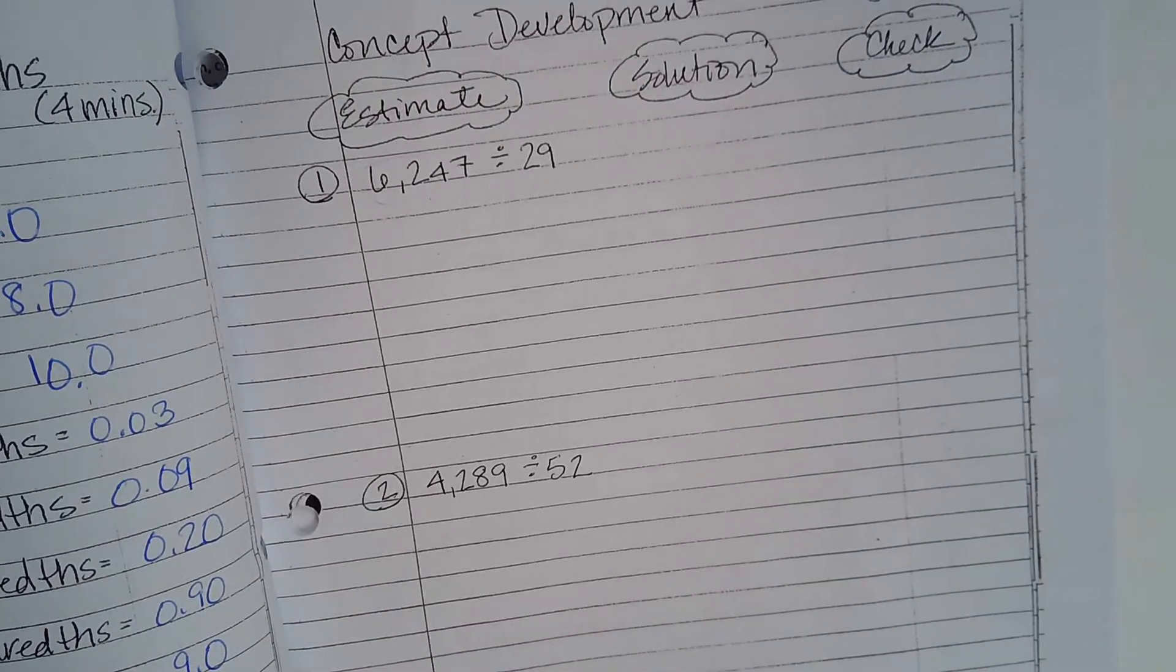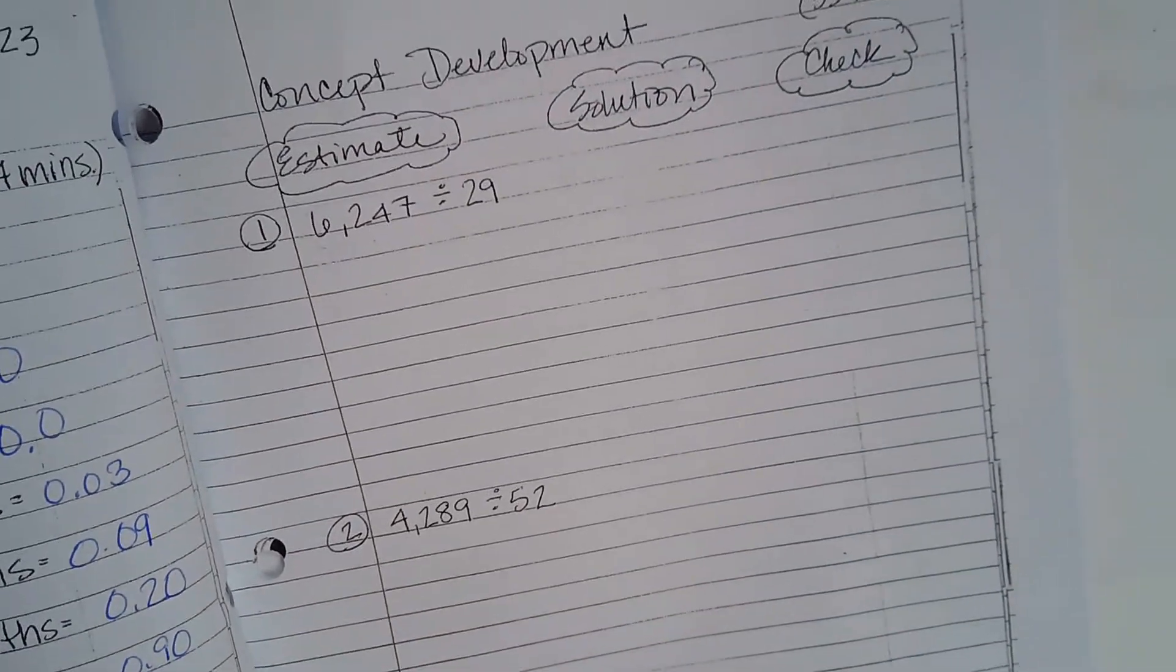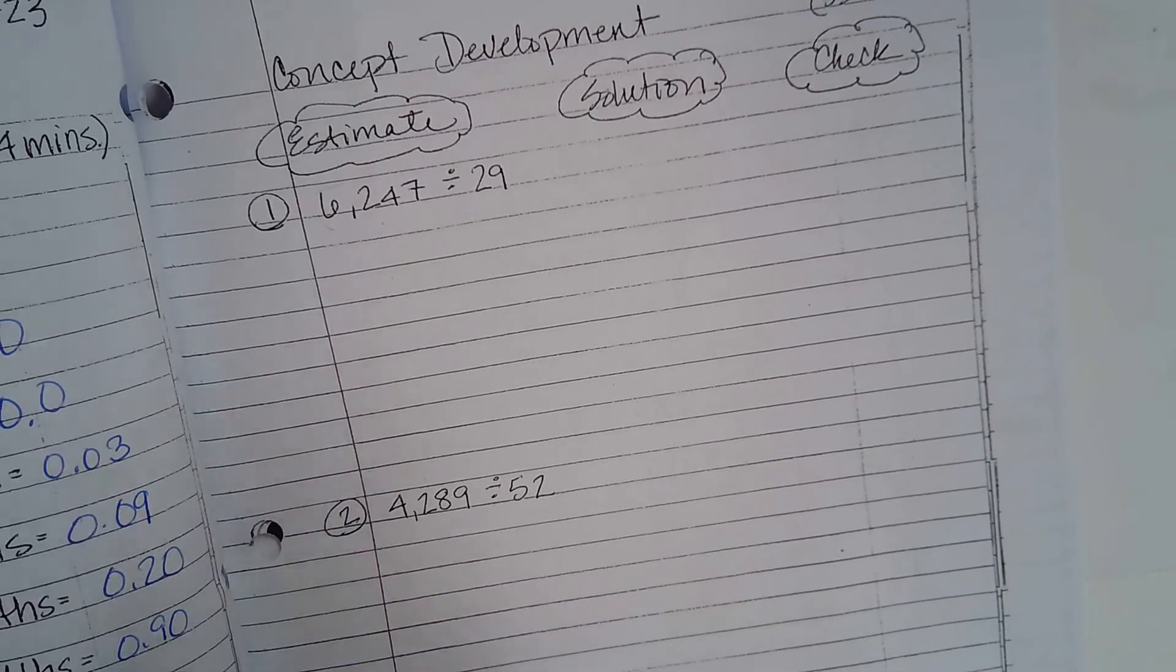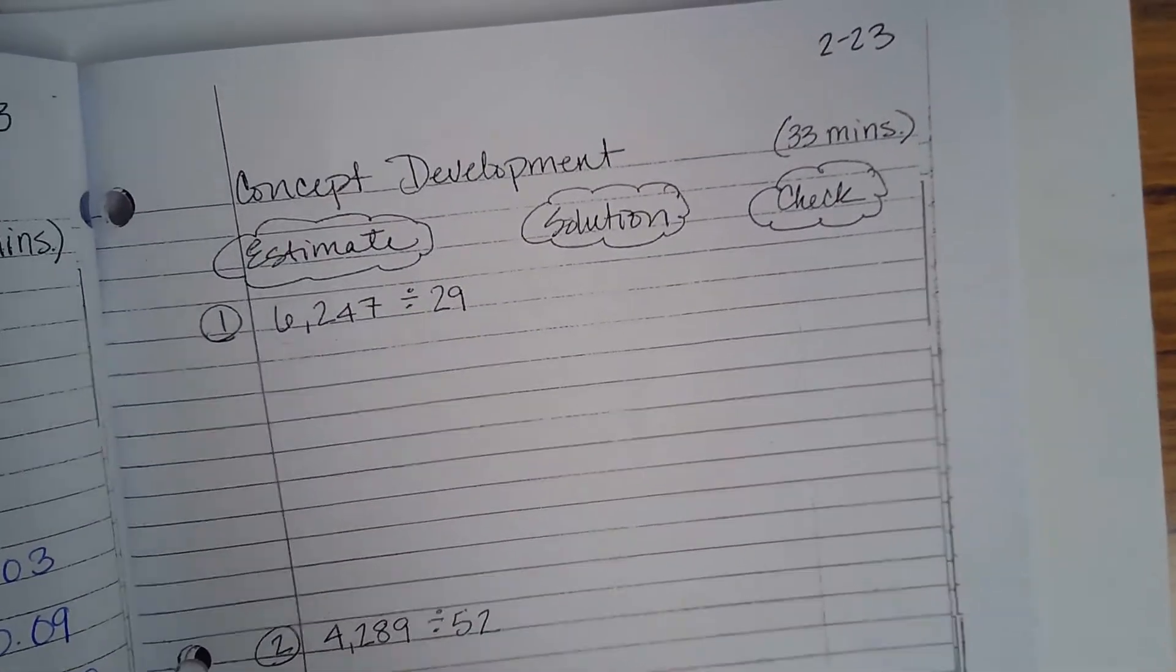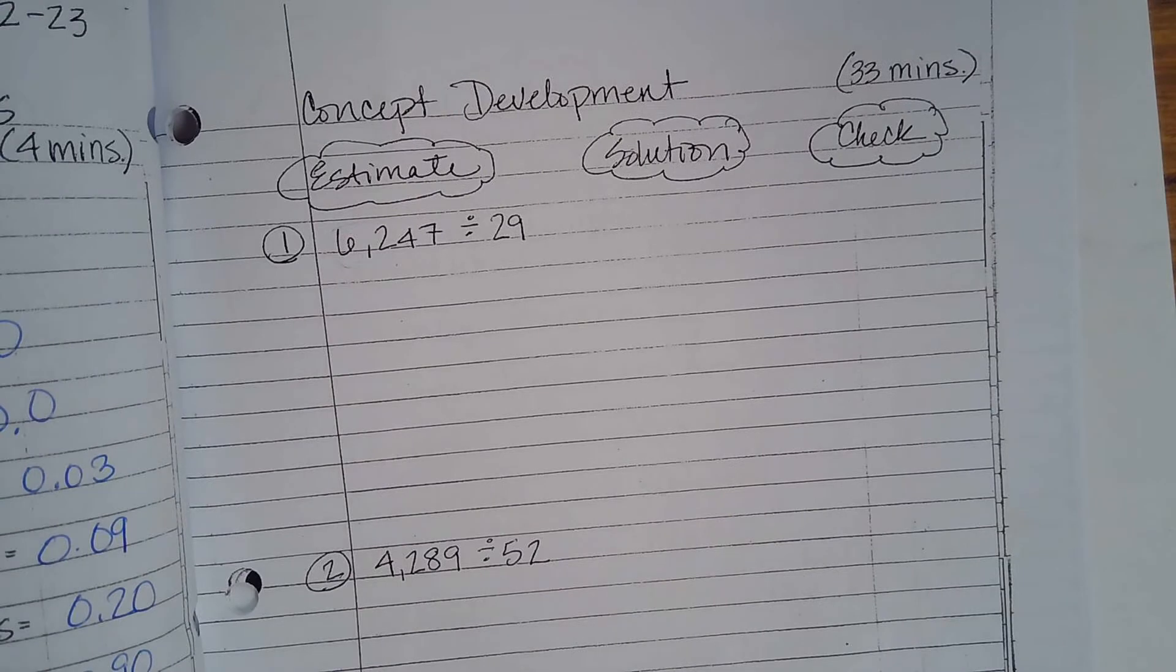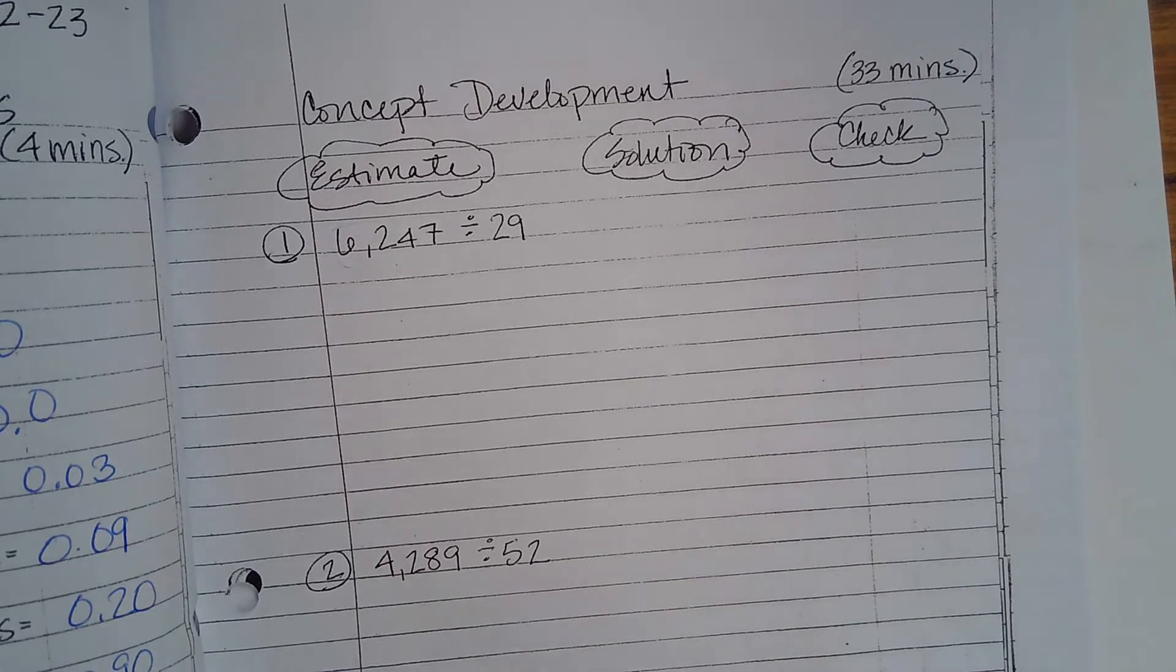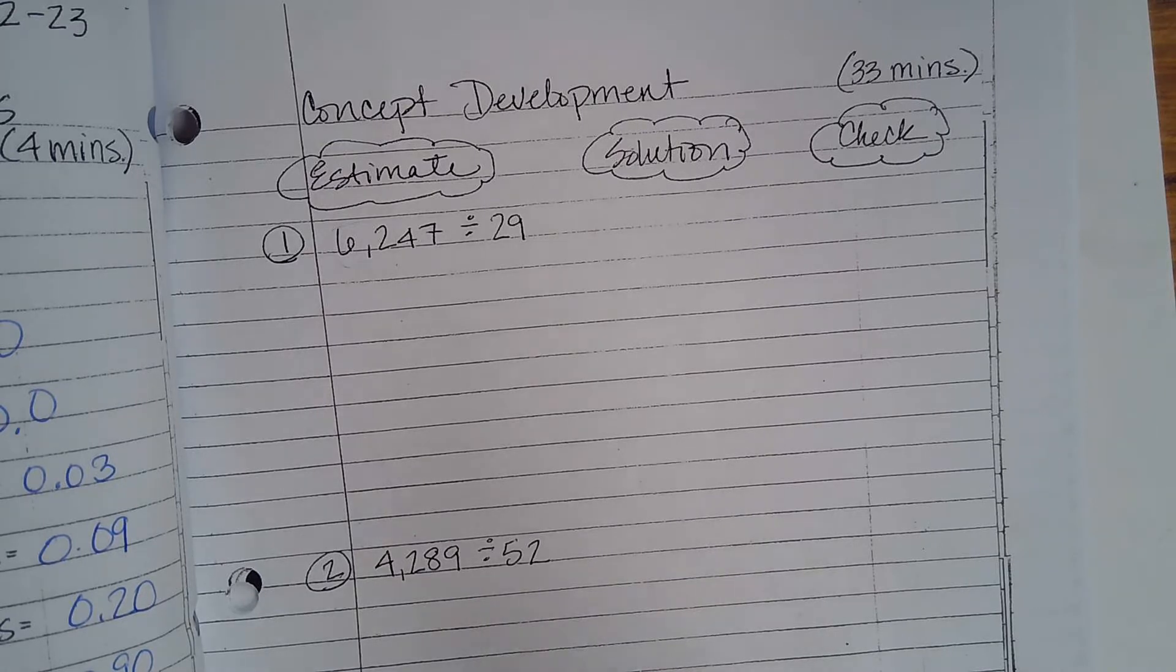Our objective: I can divide three and four-digit dividends by two-digit divisors, resulting in a two or three-digit quotient. We spent almost two weeks practicing estimating with multiplication and division. We're always going to use that skill of estimating to find that first number we're going to try in our problem.